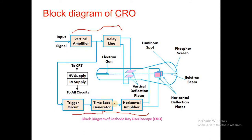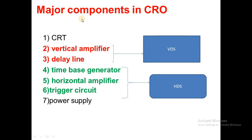What are the major components in the CRO? Always remember, CRO is an analog device and it does not have any memory. The major components are: vertical deflection system, horizontal deflection system, power supply, and CRT. Vertical deflection system is divided into two parts — vertical amplifier and delay line. Horizontal deflection system is divided into three parts — time base generator (also called ramp generator or sweep generator), horizontal amplifier, and trigger circuit.